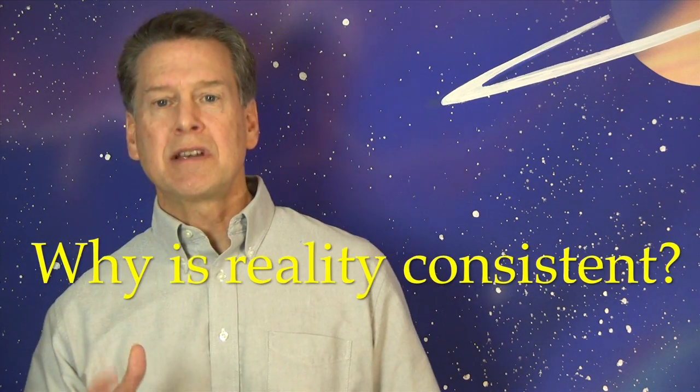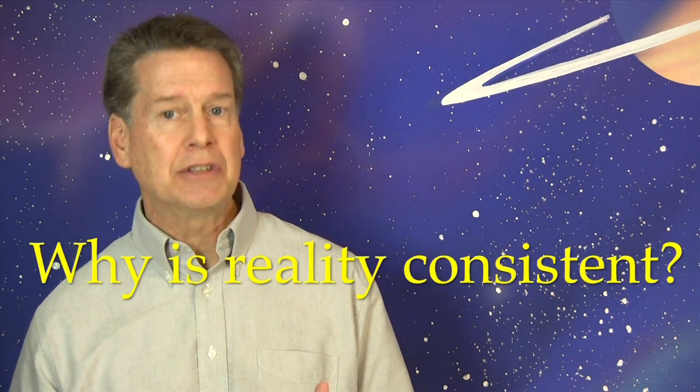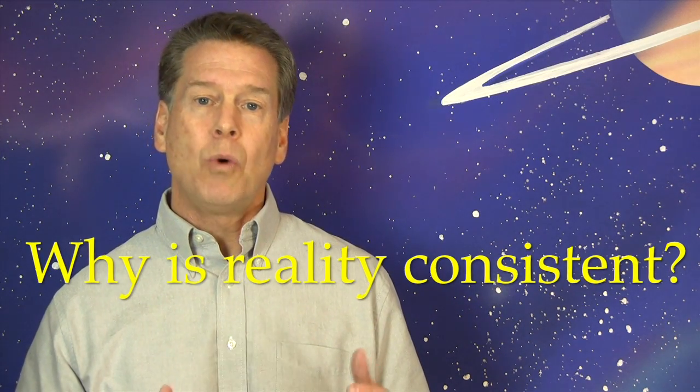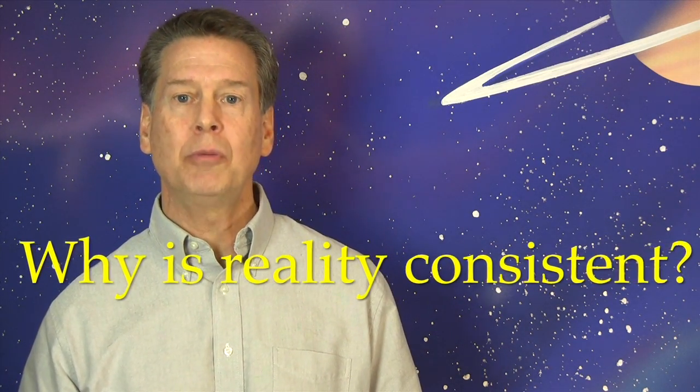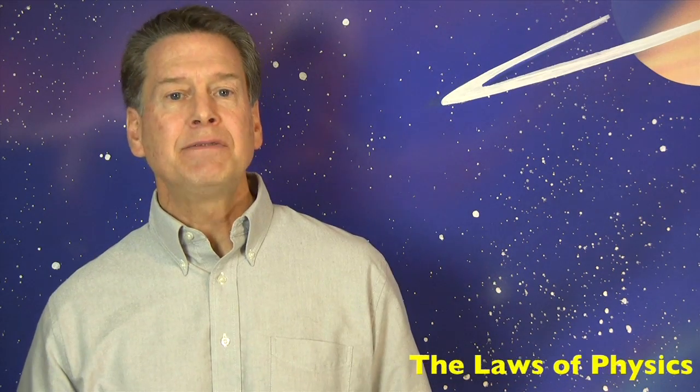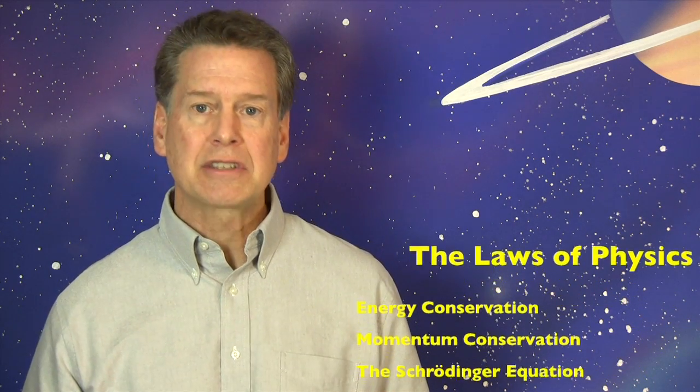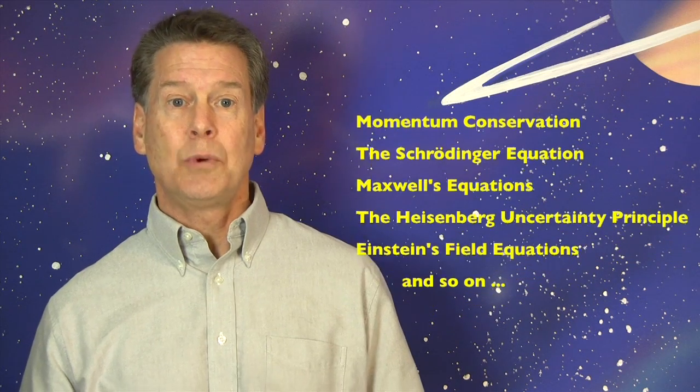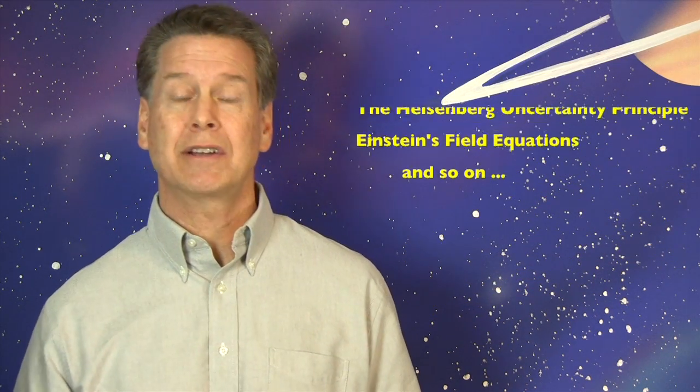I'm not asking whether or not some particular fundamental constant changes a little over the eons. Rather, why is anything the same from moment to moment? The laws of physics are called laws only because we observe them to be consistent. We have no idea why they are consistent, though.